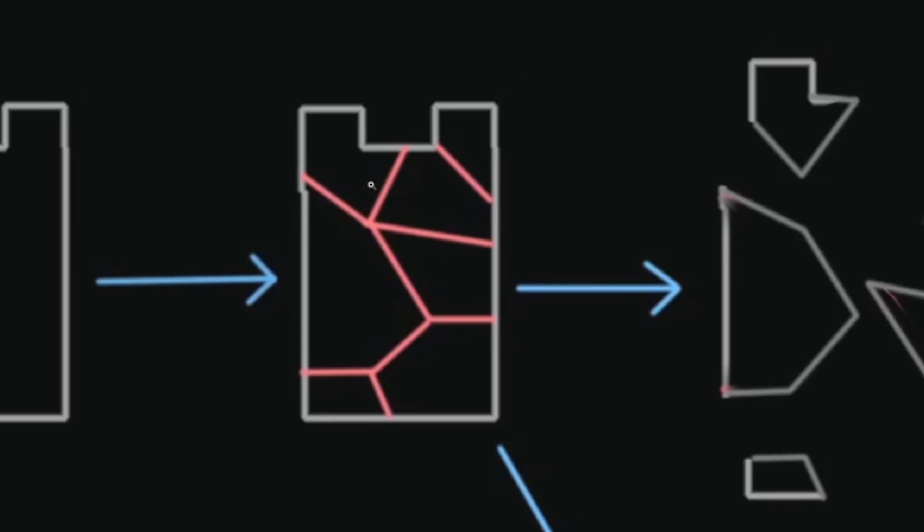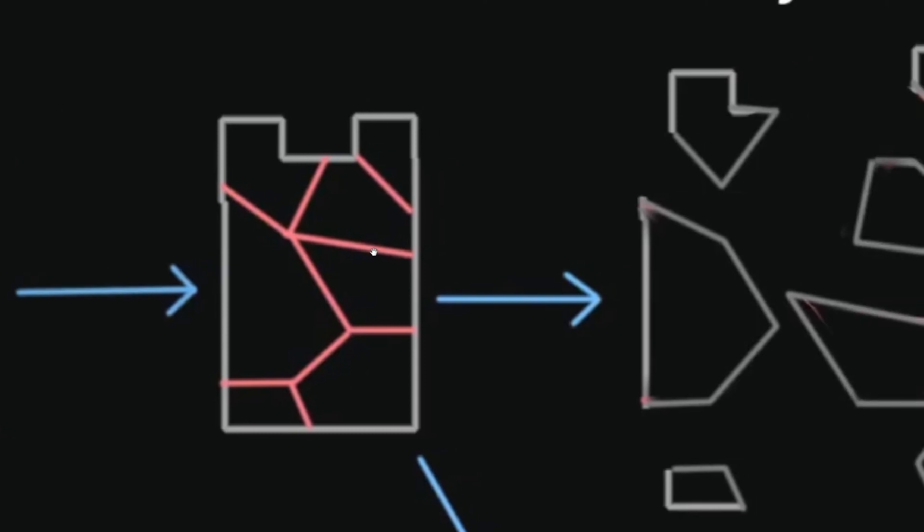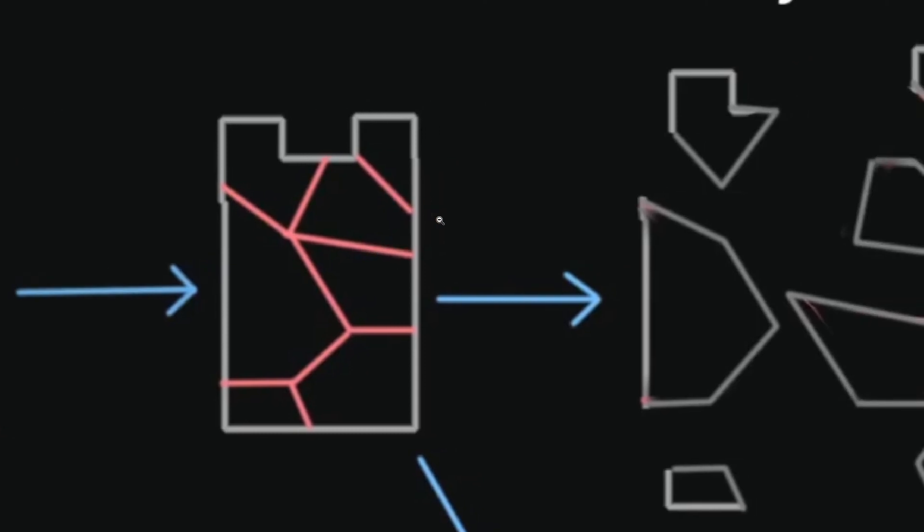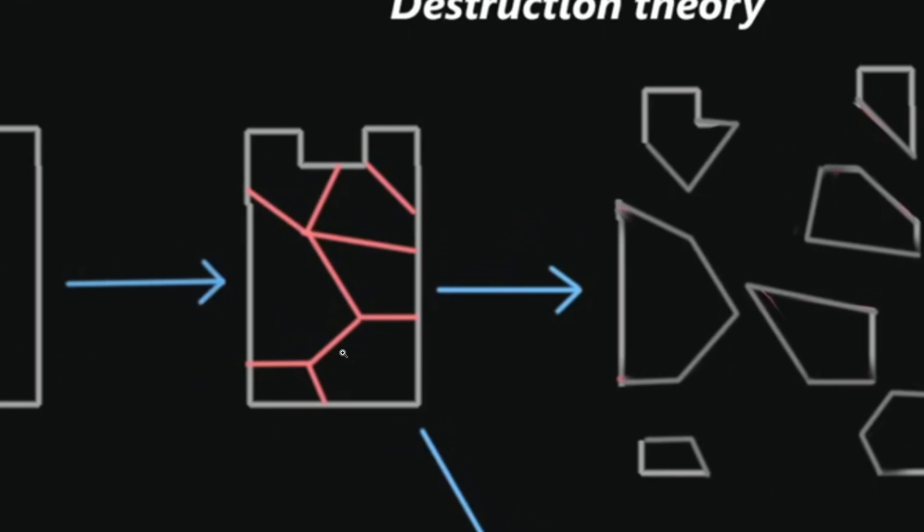When we cut it, we can decide how we want to cut it. We want to cut it like this, or straight like bricks, or like glass broken. The quality of your destruction will highly depend on how you cut your mesh.